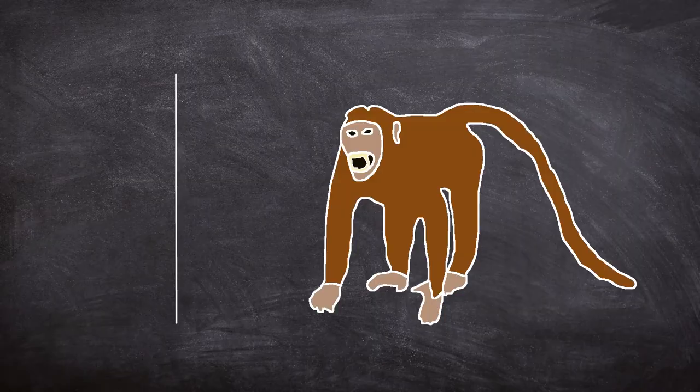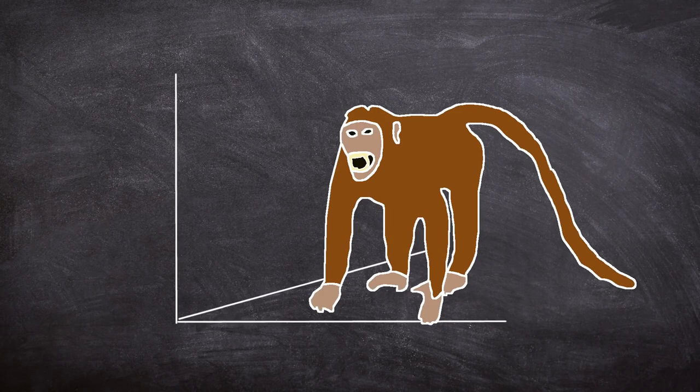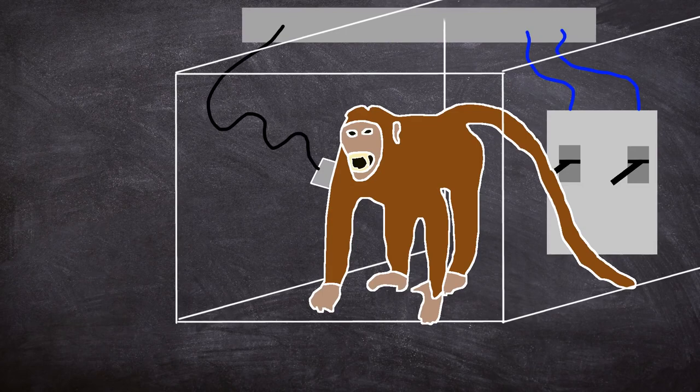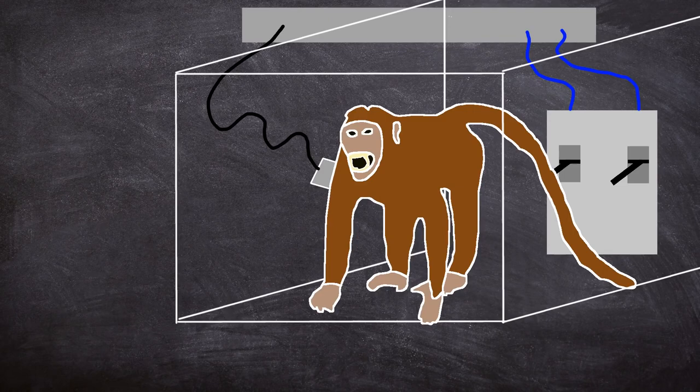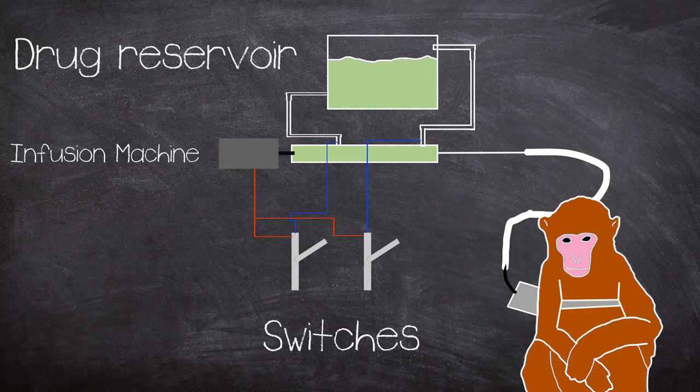Each monkey was housed in a small cubicle - 36 inches high, 30 inches wide, and 26 inches deep. The floor had a mesh screen with a pan underneath that facilitated ease of cleaning, with it being flushed every four hours. There is also a panel with two switches mounted on the back wall of the cubicle. These were key to testing the animal's drug dependence.